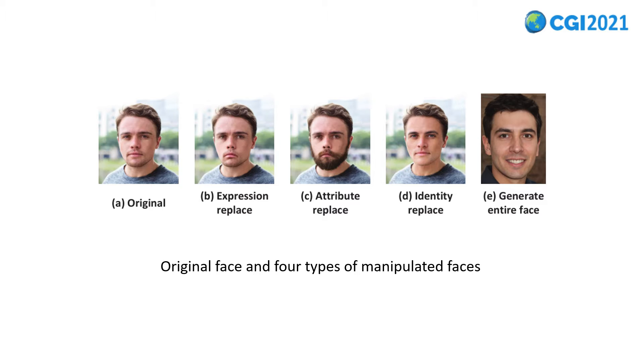For example, figure B changes the expression from smile to sad, figure C adds beard to figure A, and figure D changes the identity. The second one can generate entire synthesis-sized faces, and recent works mainly concentrate on various GANs. Figure E is generated by StyleGAN2.